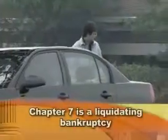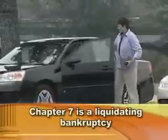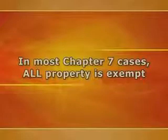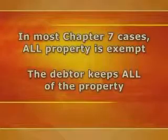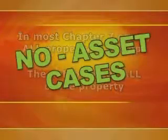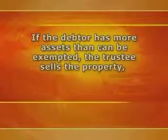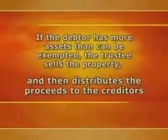A Chapter 7 is a liquidating bankruptcy. In return for having debts discharged — meaning the debtor is no longer legally obligated to pay them — the debtor must turn over certain property to the Chapter 7 bankruptcy trustee. The law allows the debtor to keep some property as exempt so the debtor can make a fresh start. In most Chapter 7 cases, all property is exempt, and so the debtor keeps all of the property. Those cases are sometimes called no-asset cases.